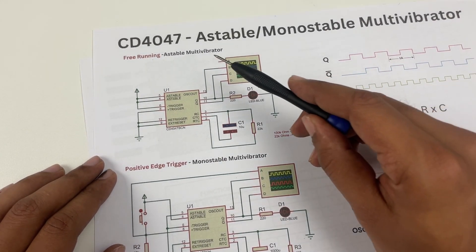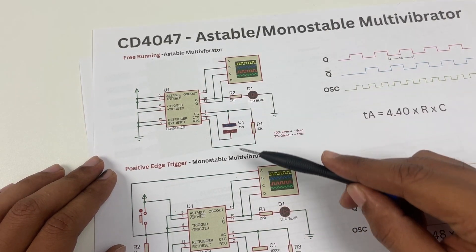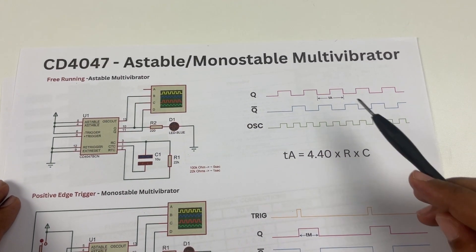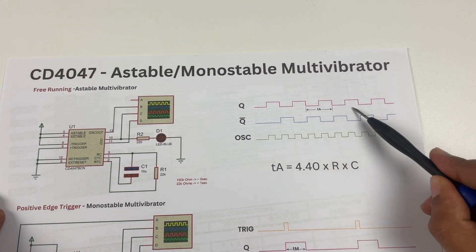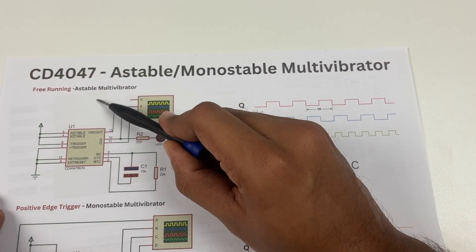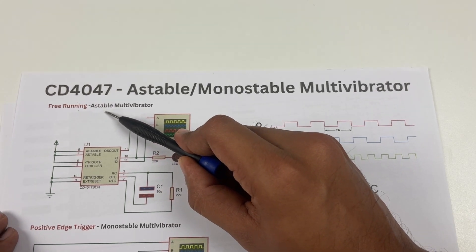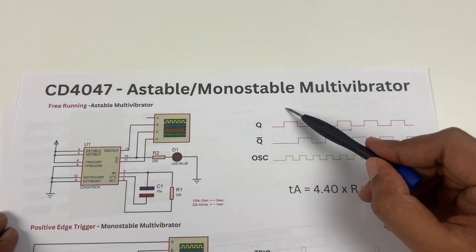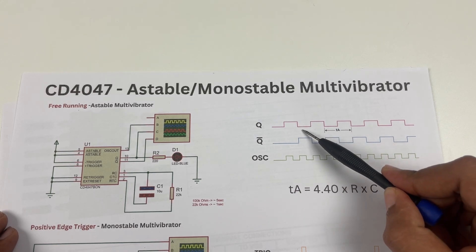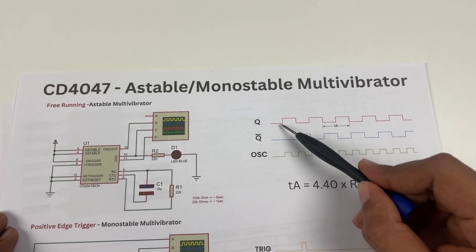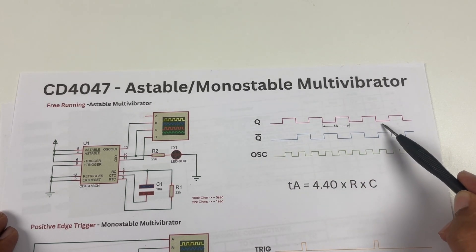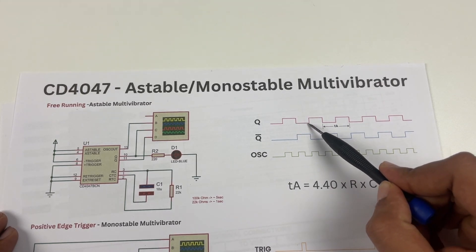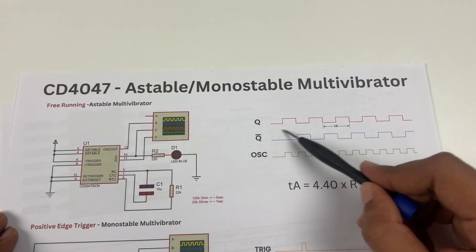First let's understand what is an astable multivibrator and what is a monostable multivibrator. As the name suggests, in an astable multivibrator there is no stable state, meaning neither the high state nor the low state is stable. As you can see, the output keeps changing between the high state and the low state.